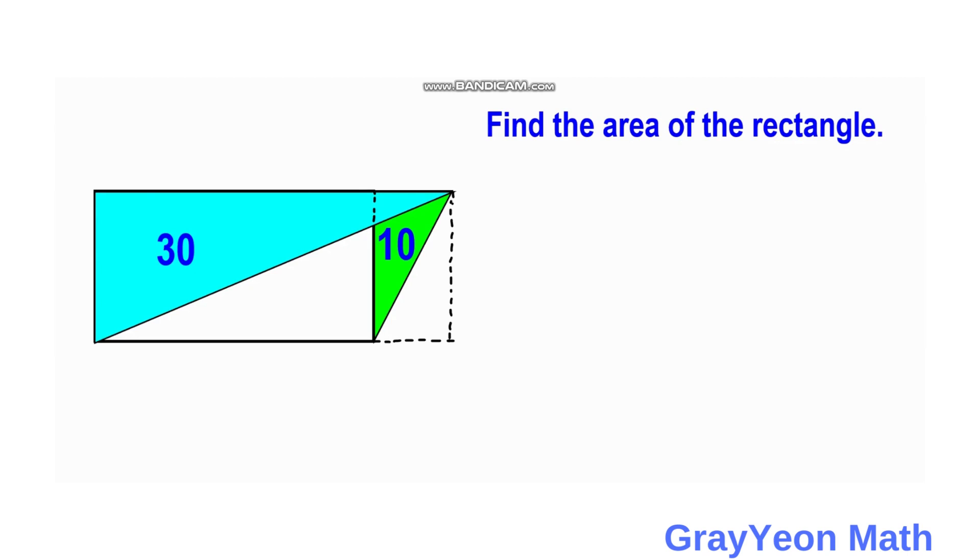So now we have sheared the two triangles. And as you can see, the triangles lie inside their respective rectangles. This blue triangle lies on this rectangle with this length.